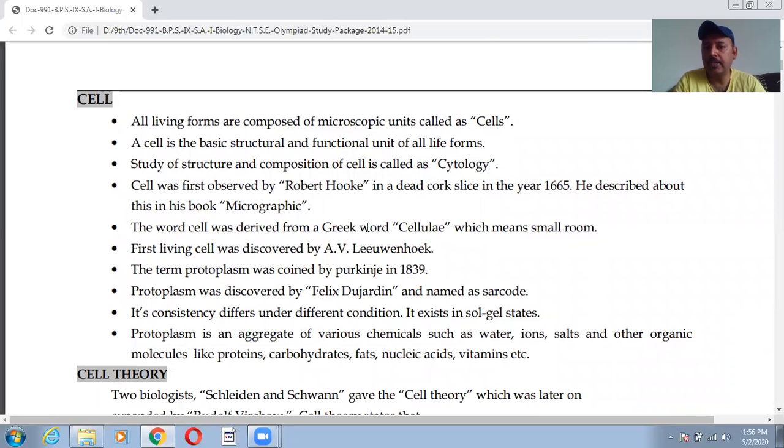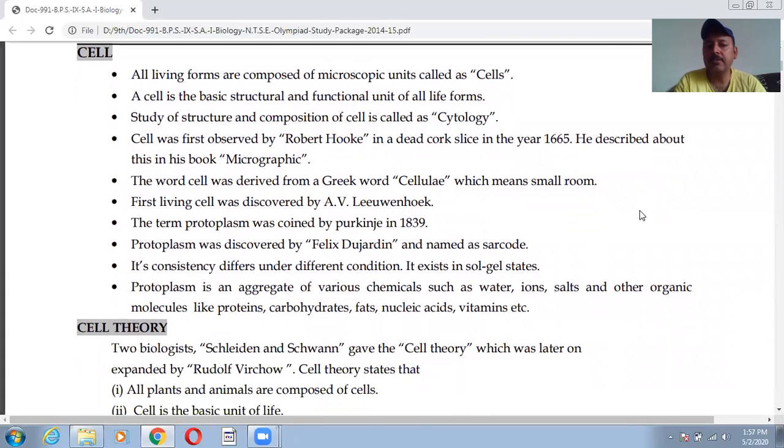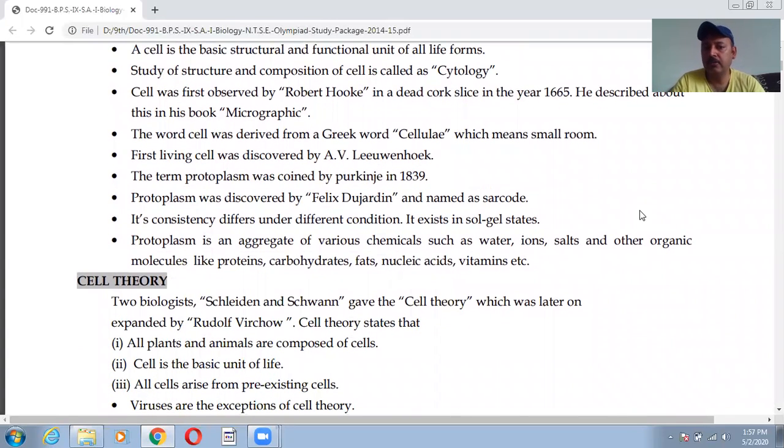Study of cell is known as cytology. It was first discovered by Robert Hooke in 1665. The word cell was derived from a Greek word cellulae which means small room, as we compared with the structure of the honeycomb. First living cell was discovered by A.V. Leeuwenhoek. Protoplasm was coined by Purkinje in 1839. Protoplasm was discovered by Felix Dujardin and named as sarcode.